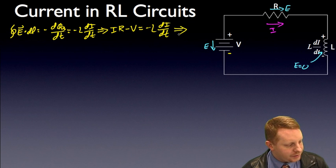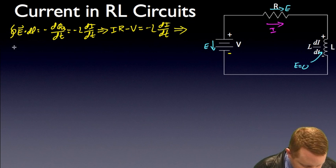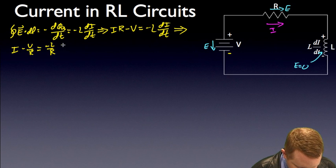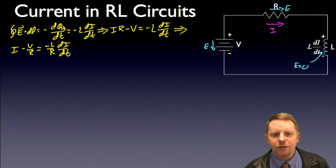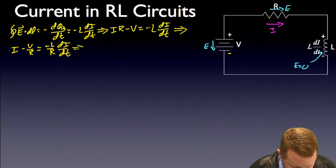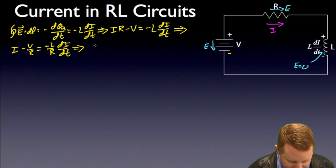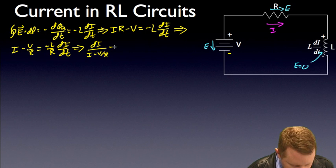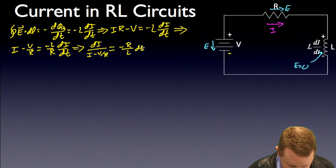Rearranging this a little bit, I minus V/R must equal minus L/R times dI/dt. And now we can do our separation of variables to get all variables of like kinds on the same side. This implies that dI divided by (I minus V/R) must be equal to minus R/L dt.